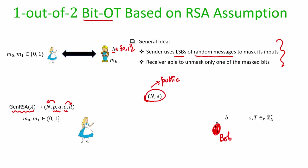Bob has a secret bit B. He picks two random messages — small s and capital T — from Z_n*. He then computes the output of the RSA function on input s, which is S = s^e mod n. He can compute this because he knows e and n. The result, big S, is an element of Z_n* again, since the RSA function is a bijection from Z_n* to Z_n*. So now Bob has two elements: big S and big T.